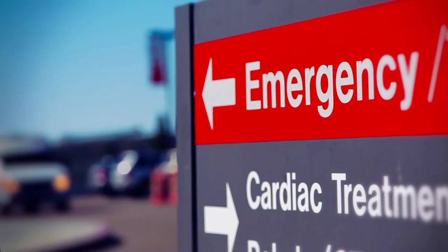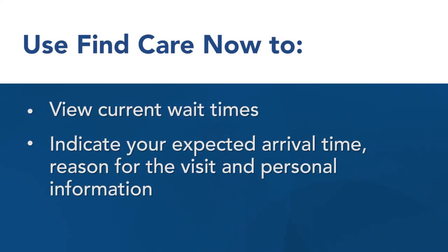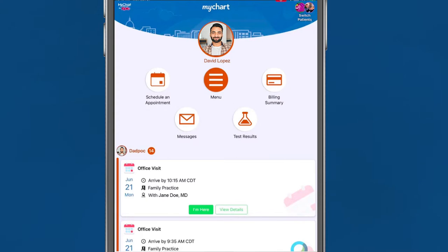Need to visit our emergency room? Use Find Care Now to view current wait times and help us prepare for your visit by indicating your expected arrival time, reason for the visit, and personal information. Find Care Now is accessible from our website homepage and from MyChart. In this video, we'll show you the steps for using Find Care Now in MyChart.